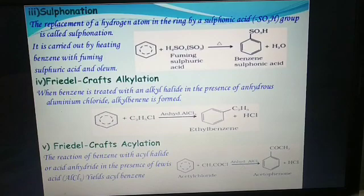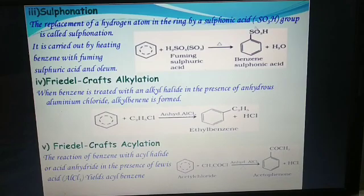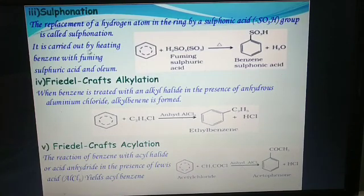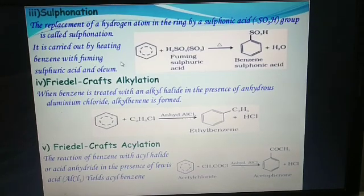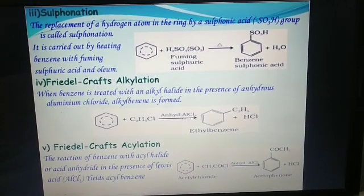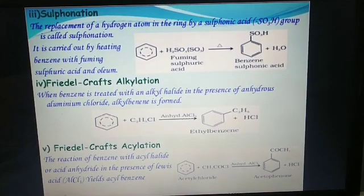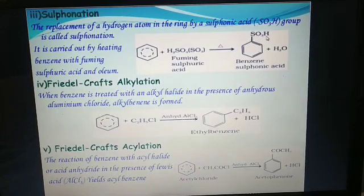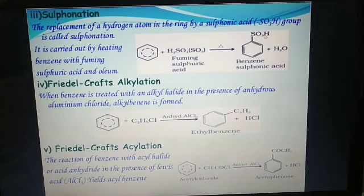Sulfonation: the replacement of a hydrogen atom in the ring by a sulfonic acid group, i.e. SO3H group, is called sulfonation. It is carried out by heating benzene with fuming sulfuric acid, oleum, which means H2SO7. This reaction gives benzene sulfonic acid, in which the SO3H group is introduced.